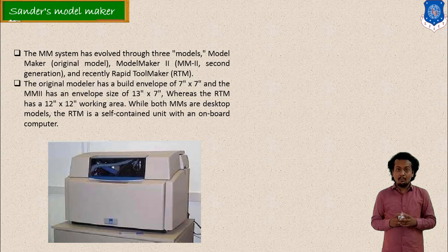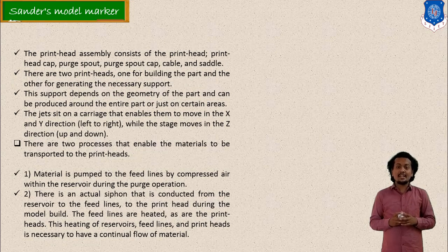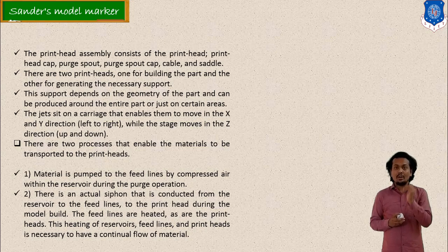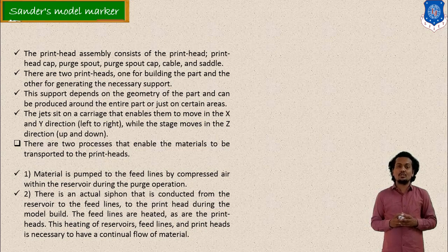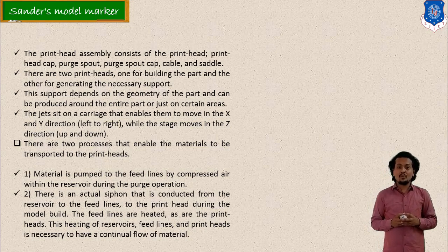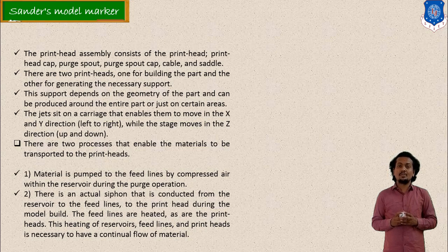All data for the Model Maker is mentioned, including the working area and an image of the system. Print heads are provided and used for depositing material in the construction of the model. Various powders or solid materials are provided along with a heating arrangement. Generally, two types of material feeding systems are used: the first is a direct feed line using compressed air, and the second uses a certain mechanism. Both systems fall under the category of Model Maker.